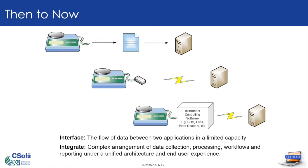Interfacing instruments is really starting to change into integrating systems. Just a couple of high-level definitions: when we interface something, we're usually looking at the flow of data between two applications in a very limited capacity — for example, transmitting a single data point like a grams reading from a balance. By contrast, when we integrate systems, we're merging two complex systems together that can do things like data collection, processing, workflows, data transformation, and reporting, unified under a single architecture for the end user. You'll hear us use both terms today: interfaces referring more to the past, integrations referring more to today.